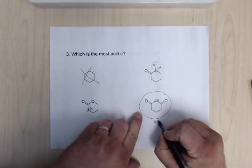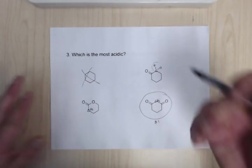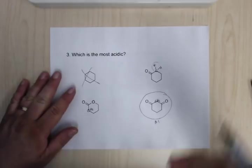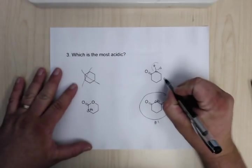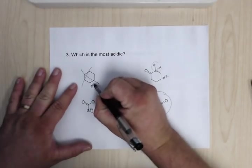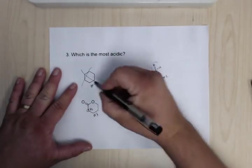So this is the most acidic. The next one would actually be this one, the ketones. So aldehydes and ketones are actually more acidic than esters, so you have to be careful about that. So this would be number two. This would be number three. This would be number four if you wanted to get these in a row. So this is the most acidic. This is the least.